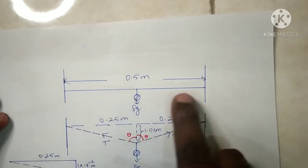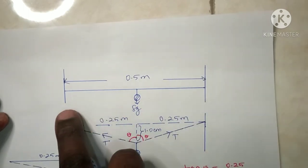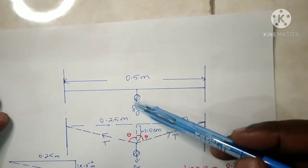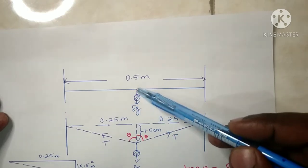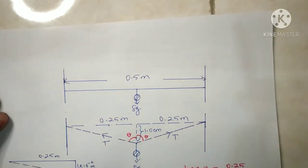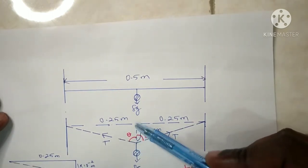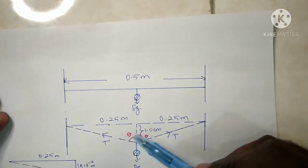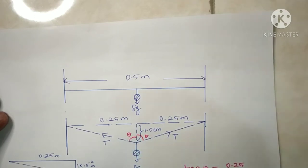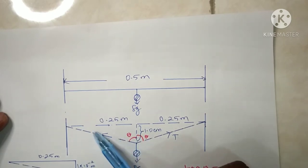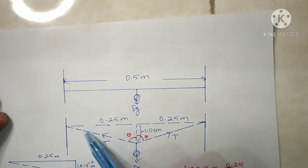A wire of length 0.5 m is fixed horizontally between two supports separated by 0.5 m. When a mass of 8 kg hangs from the middle of the wire, the midpoint sags by 1 cm, giving an angle with the same amount on both sides. The tension in the wire on both sides is also the same.